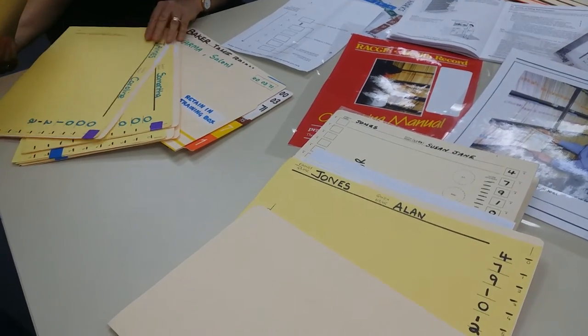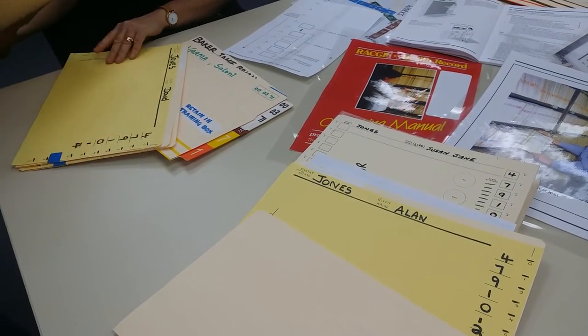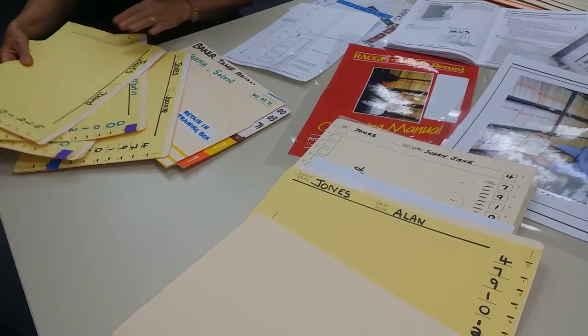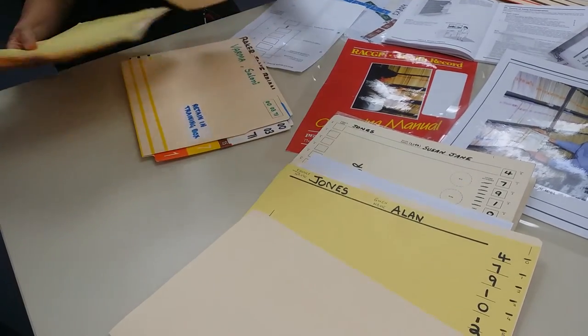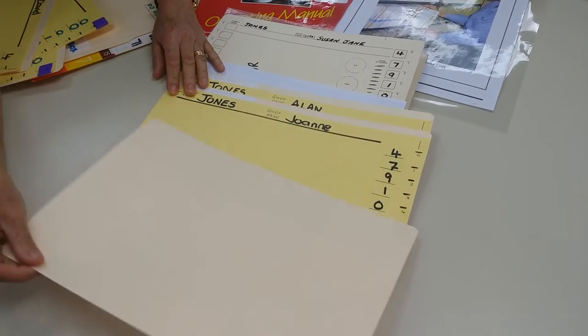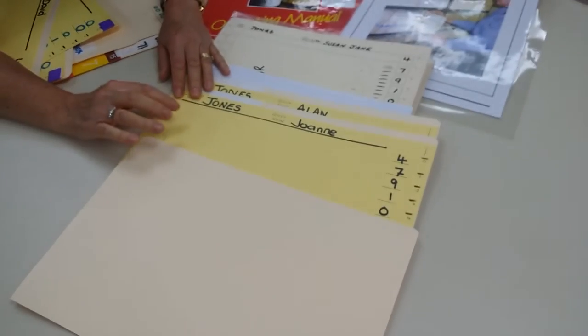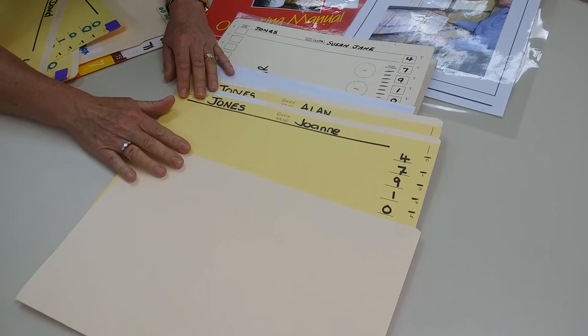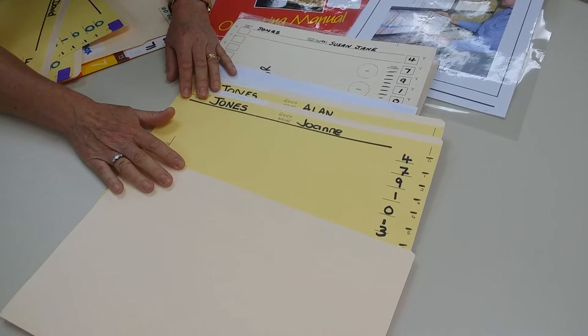Now, if she goes on and has a third baby, a little girl called Joanne, Joanne will have the same family number and she'll have her own reference number as number 3.